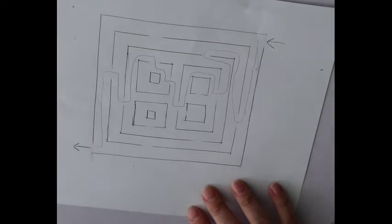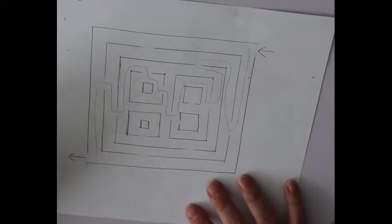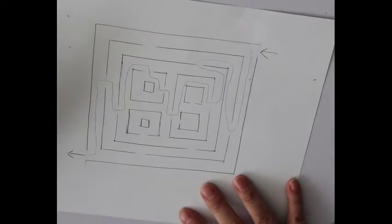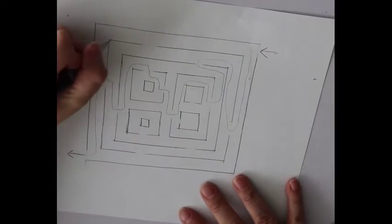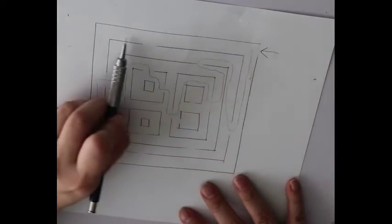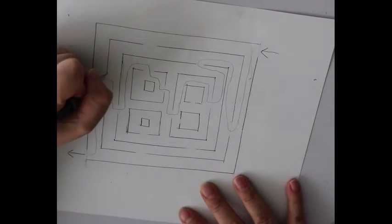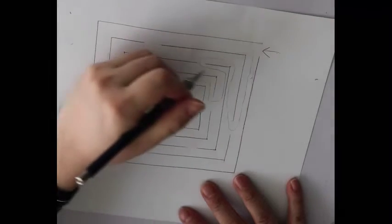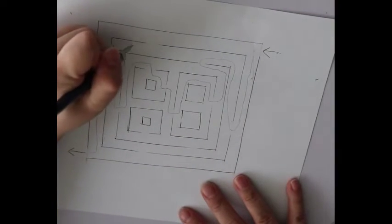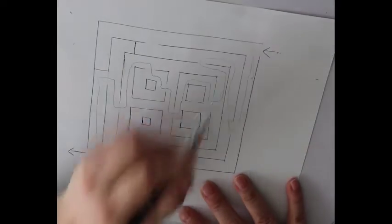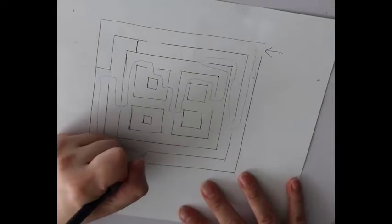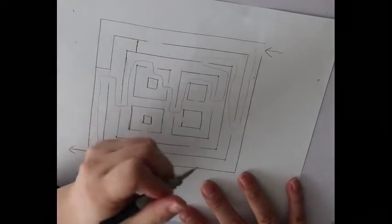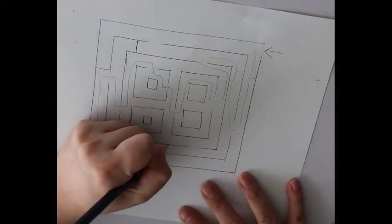So now, I'm going to put blocks on other paths. So when they try other paths, they cannot go through. So for example, if they go through here, they will be blocked by this. If they go through here, they will be blocked by this. If they go through here, they will be blocked by this. If they go through this way, they will be blocked here.